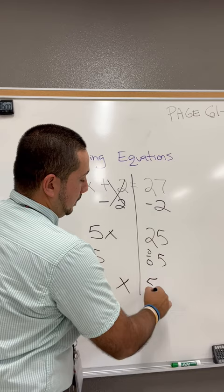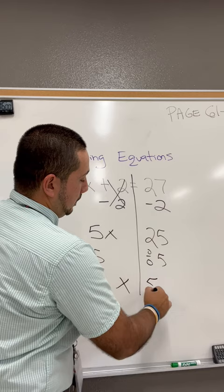x, 25 divided by 5, equals 5. That's your answer. You just solved your equation.